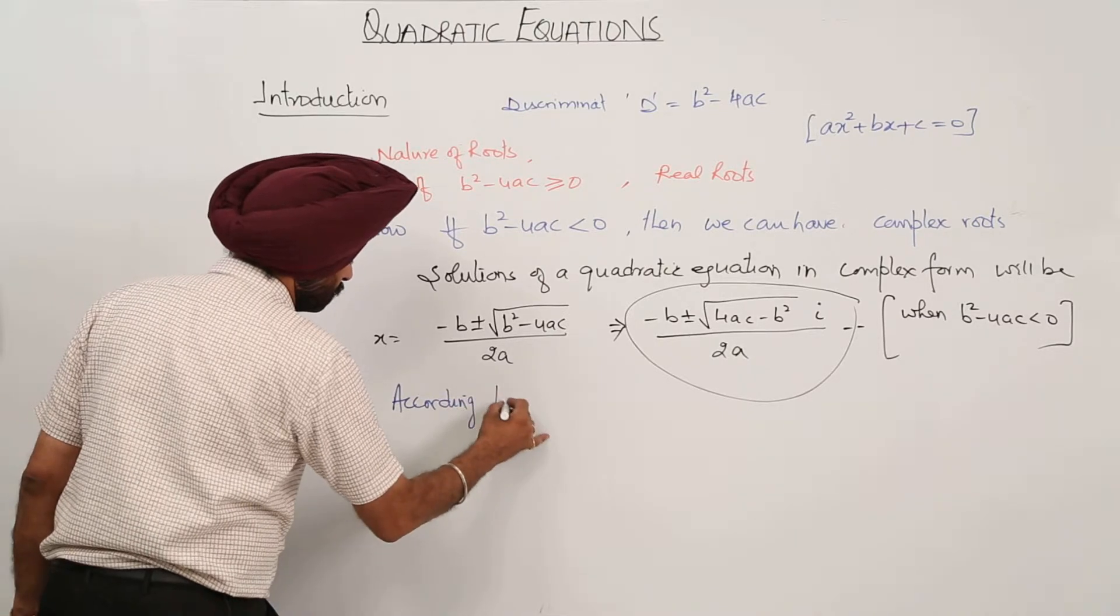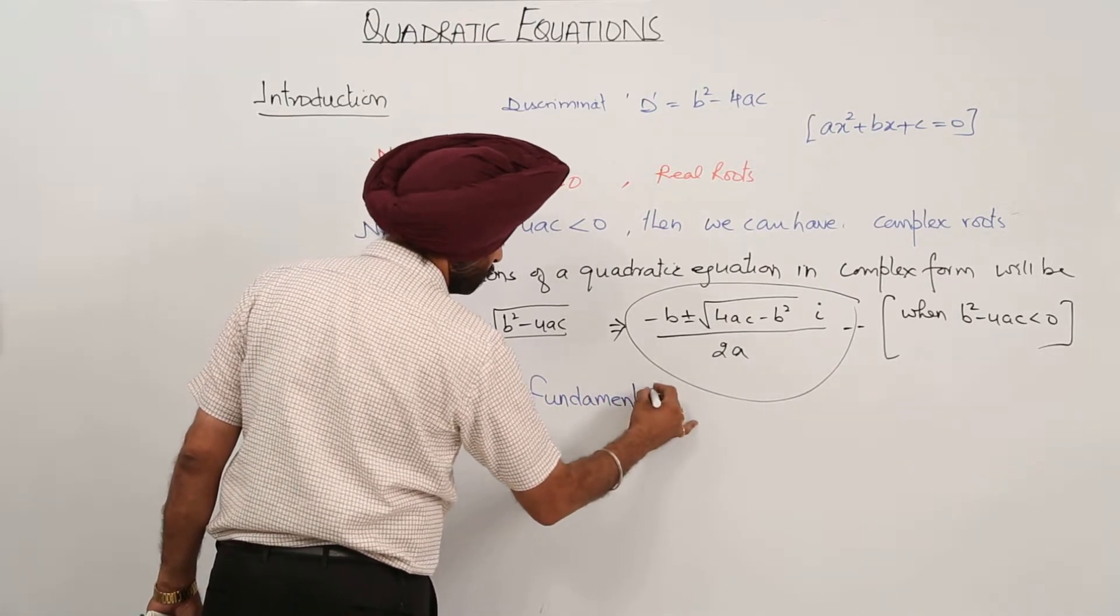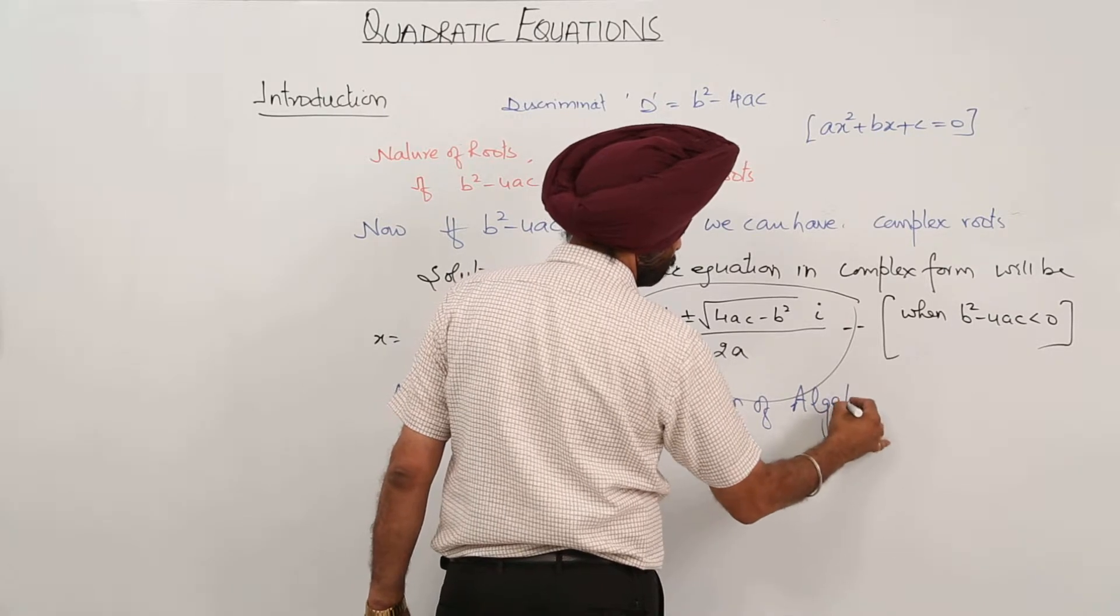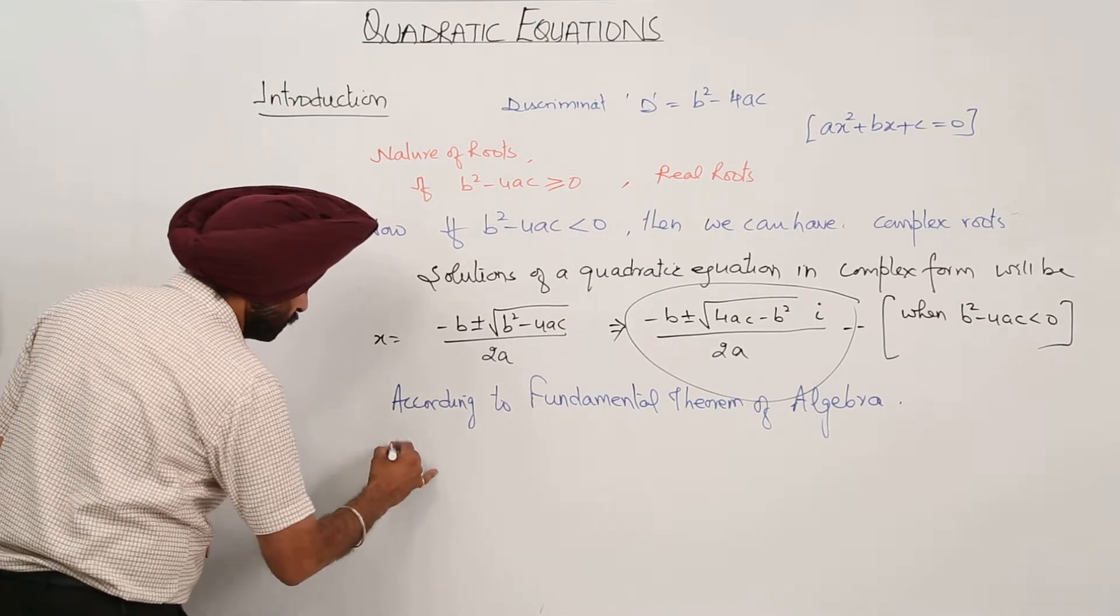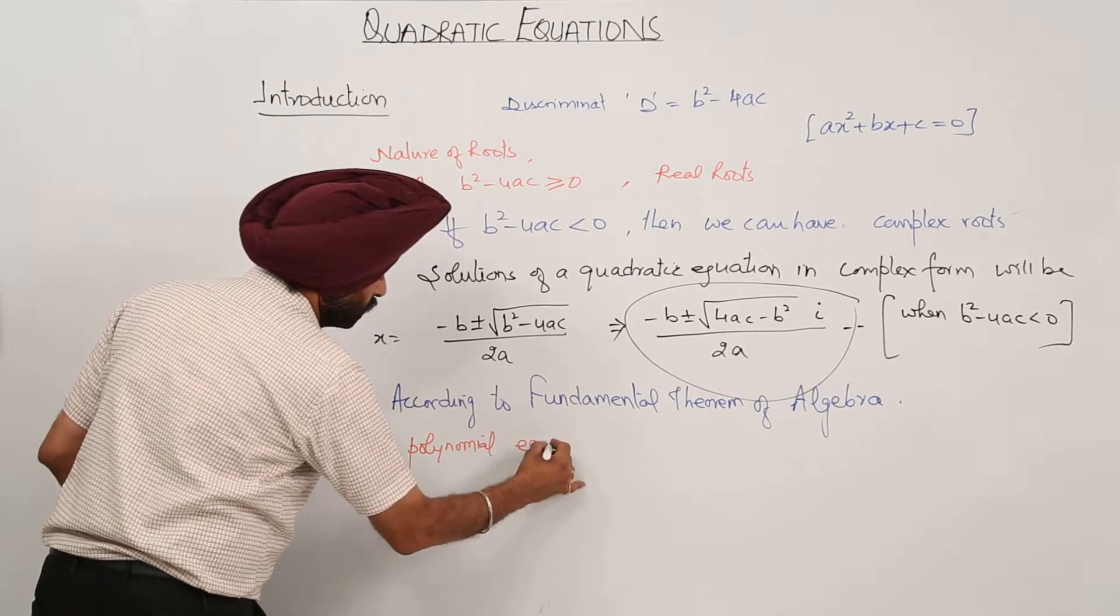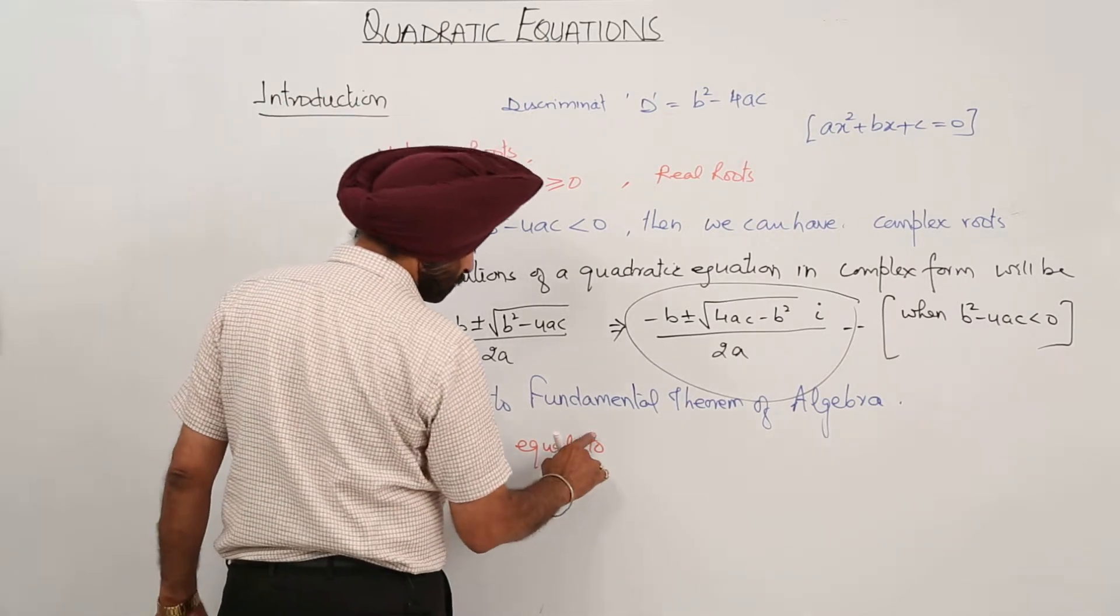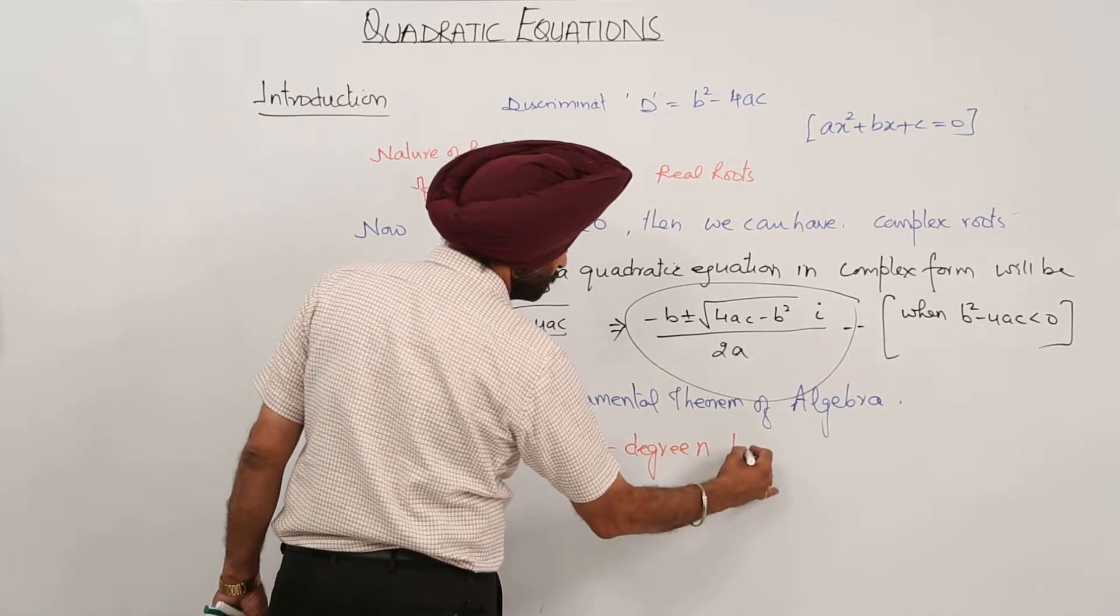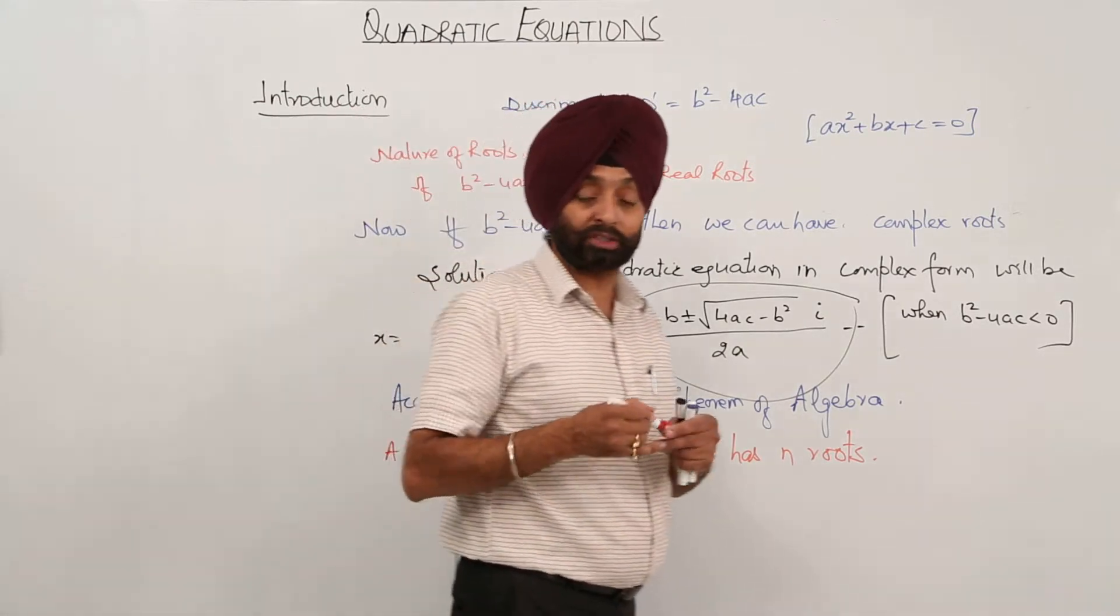Now one basic thing, according to fundamental theorem of algebra, and what is written? A polynomial equal of degree n has n roots. Is it clear?